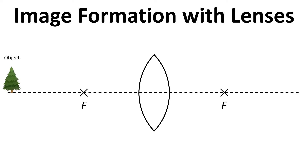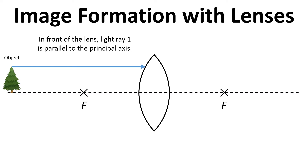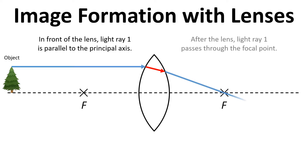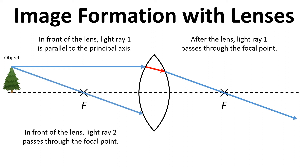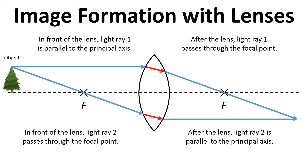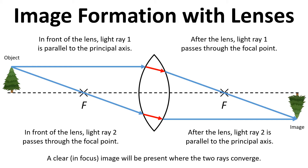If we have our object and we draw a light ray that is parallel to the optical axis or principal axis, that will hit the lens and then the light will be bent so that it passes through the focal point after the lens. Next we have a light ray going from the top of the object through the focal point in front of the lens, and the light will be bent such that it comes out parallel to the optical axis. The image will be formed on the right hand side where the two light rays converge — the image is inverted and we'll get an in-focus clear image at that point.